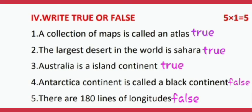Number two: The largest desert in the world is Sahara. True. Number three: Australia is an island continent. True. Number four: Antarctica continent is called a black continent. False.